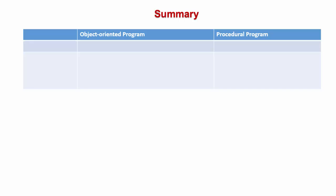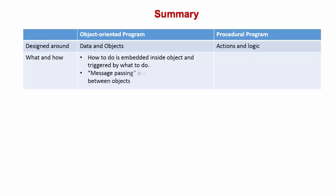Now, let us summarize our understanding between object-oriented programming and procedural programming. Object-oriented programming is designed around data which is stored inside the object. Whereas, procedural programming is designed around action and logic. In object-oriented programming, the logic about how to do is embedded inside object triggered by what to do. This is carried out by message passing which is a form of communication between objects.